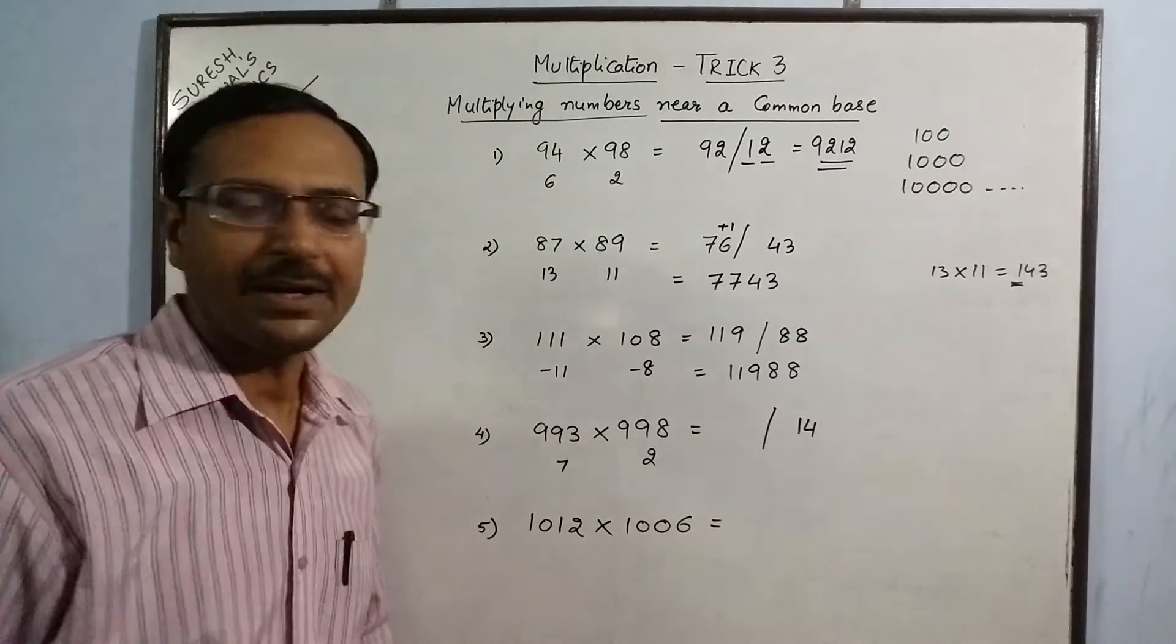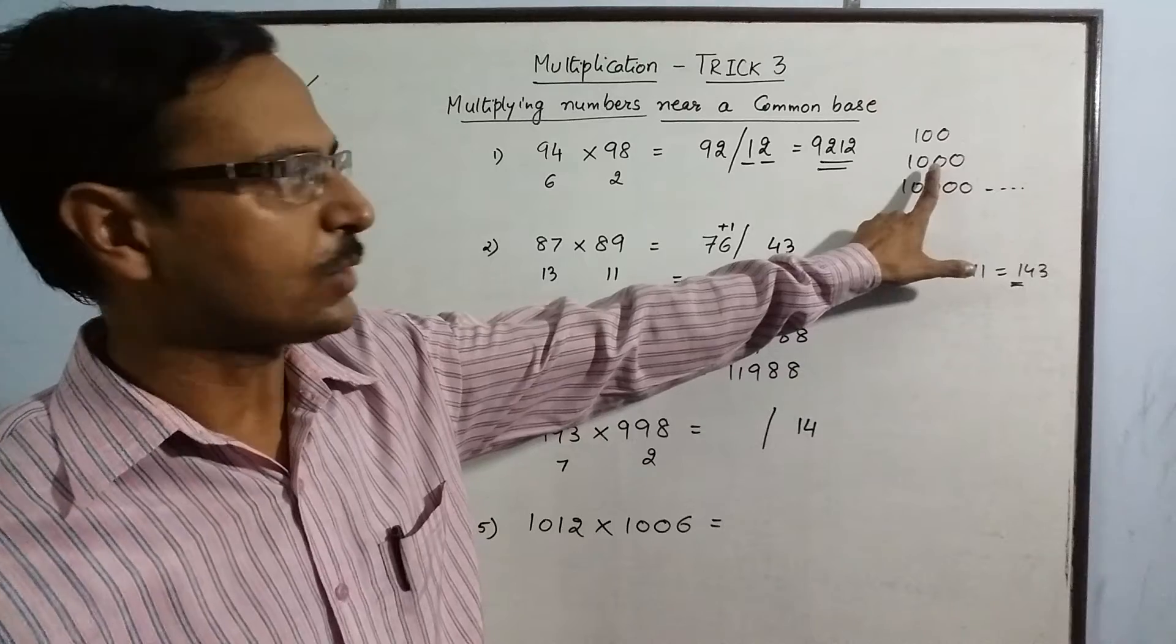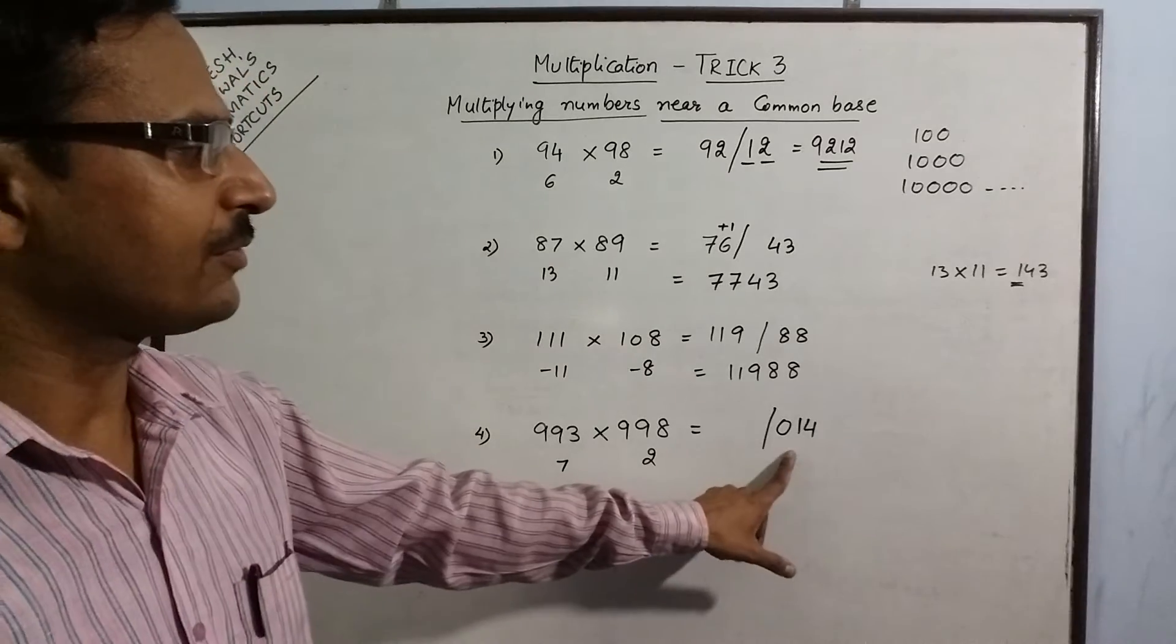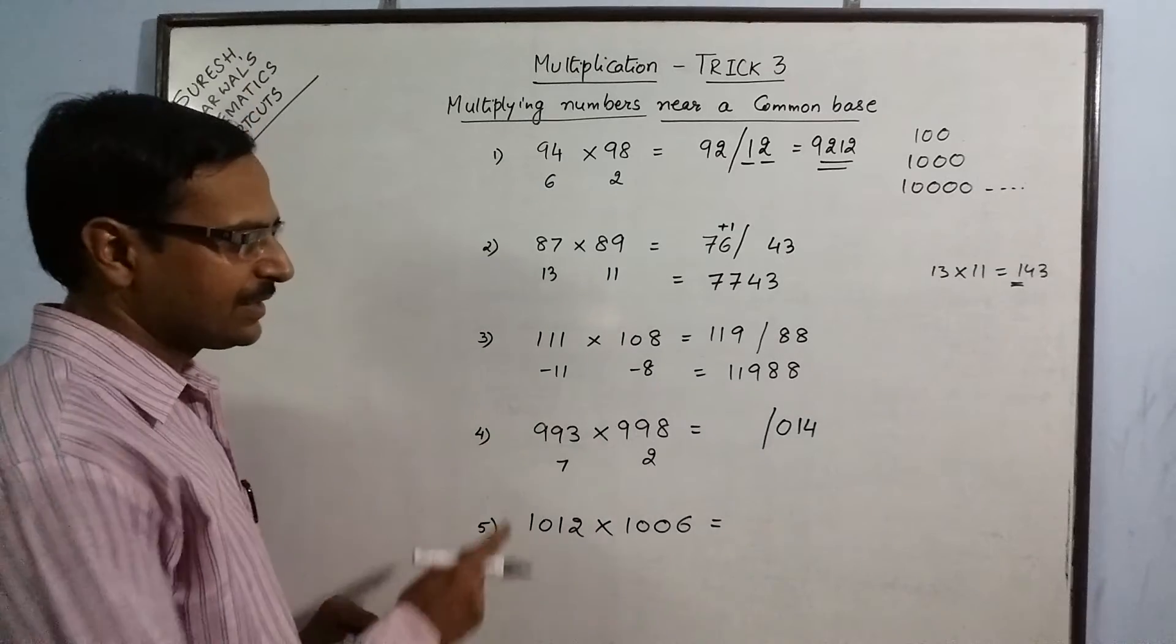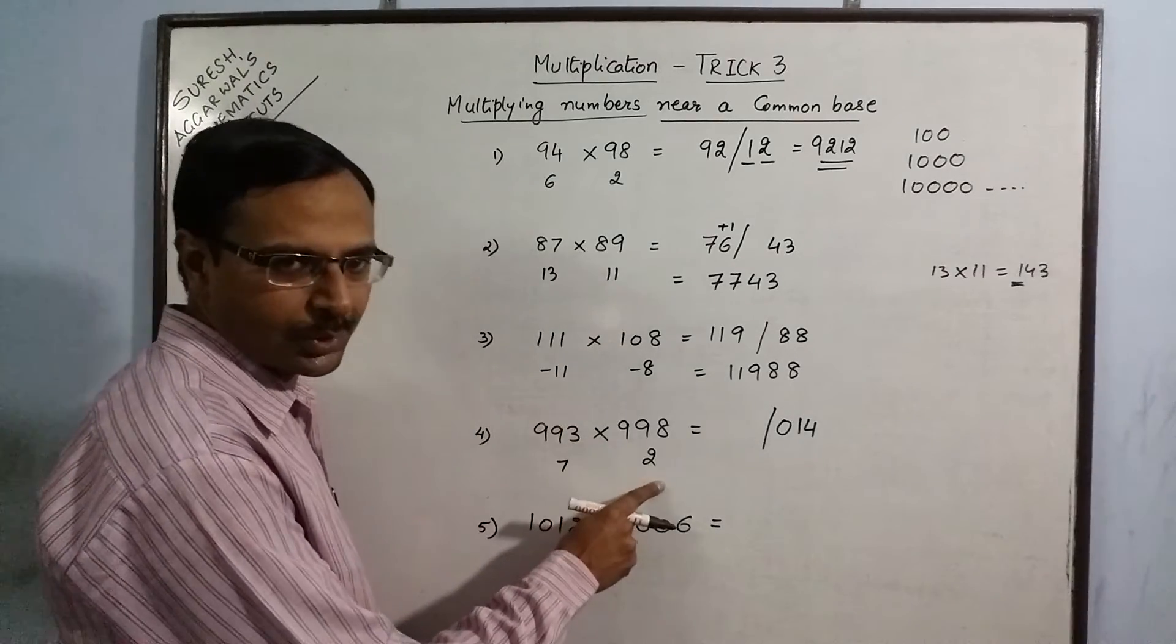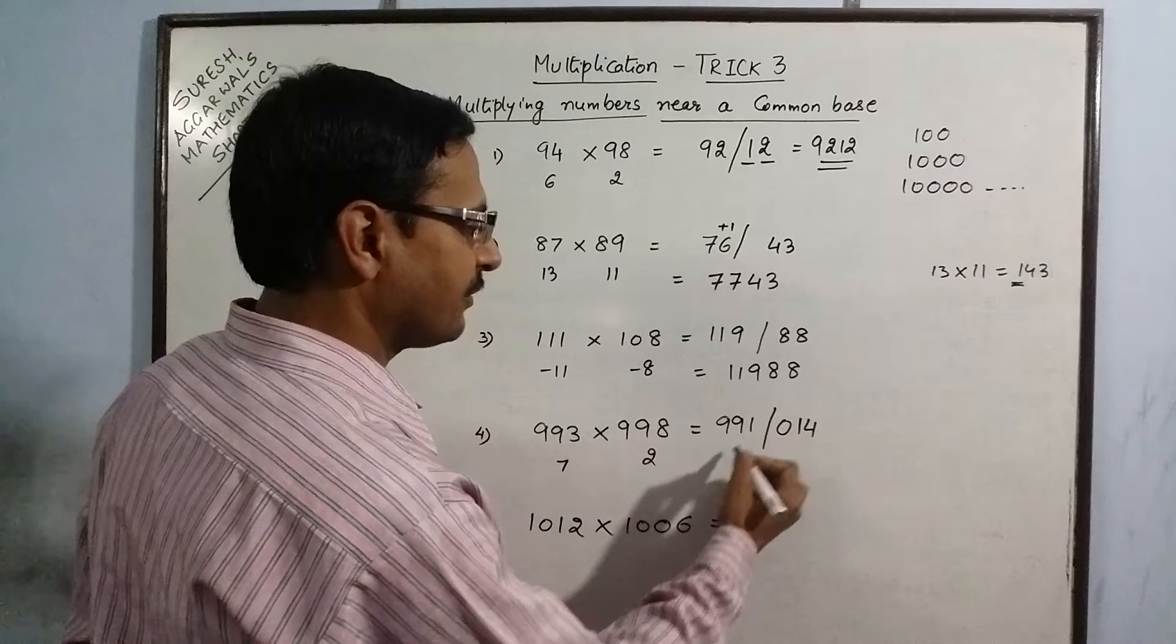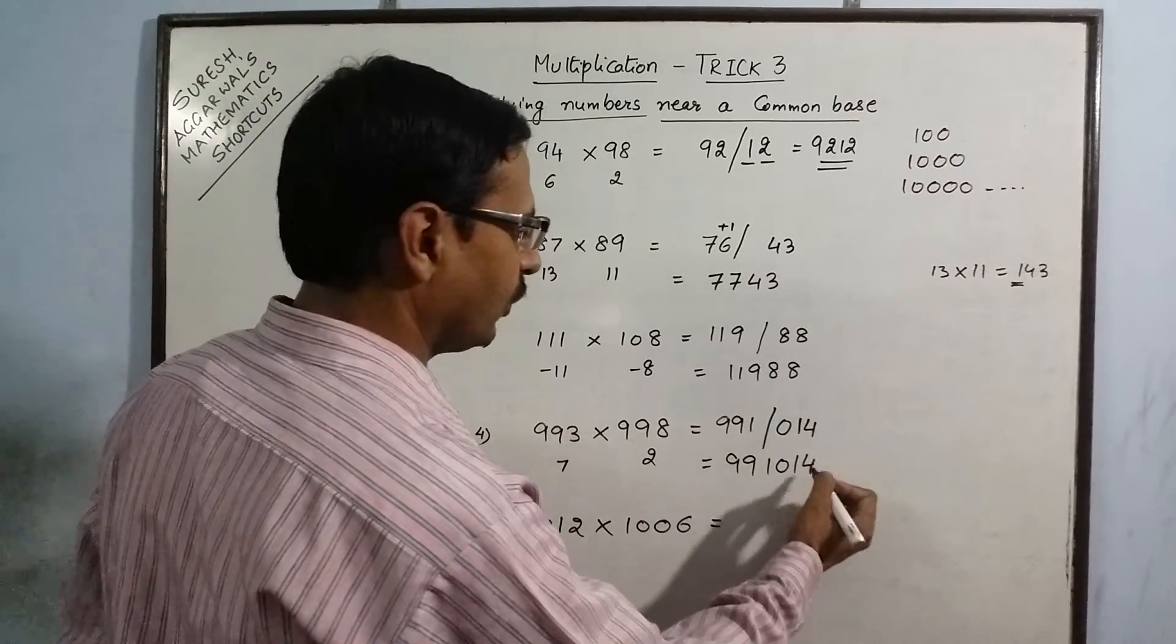7 into 2 is 14. But, 14 contains only 2 digits. Whereas, the base quantity was 1000. So, we need to put 0 before 14 to make the number of digits here and number of zeros equal. The second step remains the same. 993 minus 2 is 991. Or, 998 minus 7 is again 991. So, the final answer is 991, 0, 1, 4.